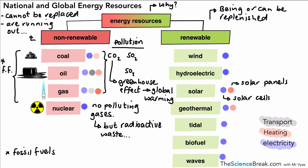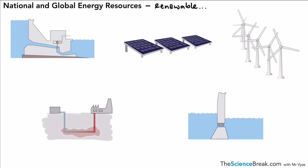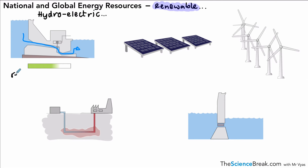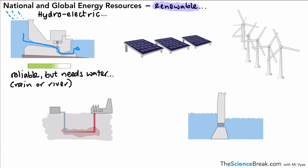Next we'll do a quick evaluation of the renewable energy resources, looking at their reliability and briefly how they work. Hydroelectric power uses a dam which holds back water; a tunnel built into the dam allows water to flow through, turning turbines to generate electricity. Hydroelectric power is quite reliable, but we do need to keep the water behind the dam topped up — this usually relies on rainfall, though these are often built on rivers which help maintain the water level.